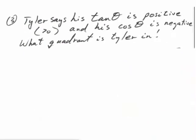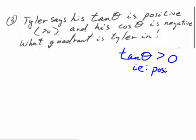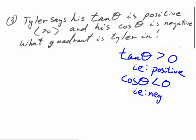Here's another one. Tyler says his tangent is positive — greater than zero — and his cosine is negative. So we text him at the Red River Ex and say, where are you, Tyler? He says his tangent is positive and his cosine is negative, and we've got to figure out what quadrant he's in. Let's draw a picture of the quadrants and use that CAST rule. So there's the Ferris wheel.